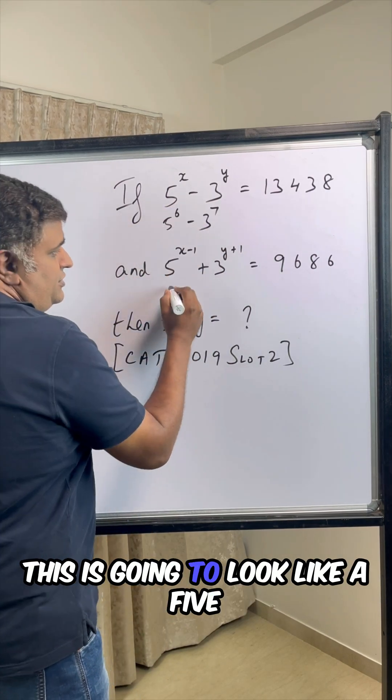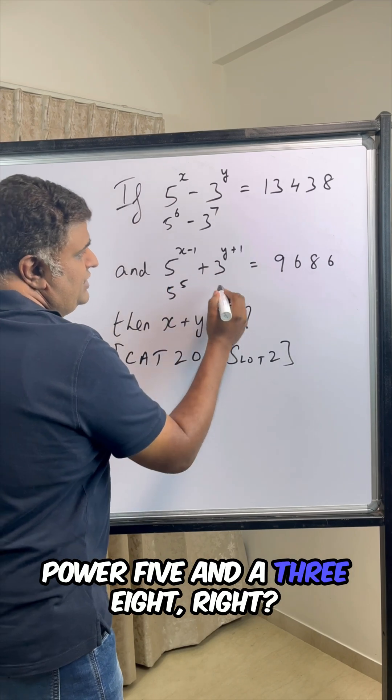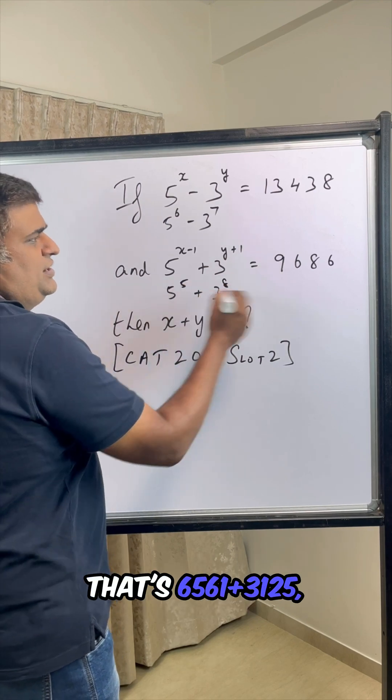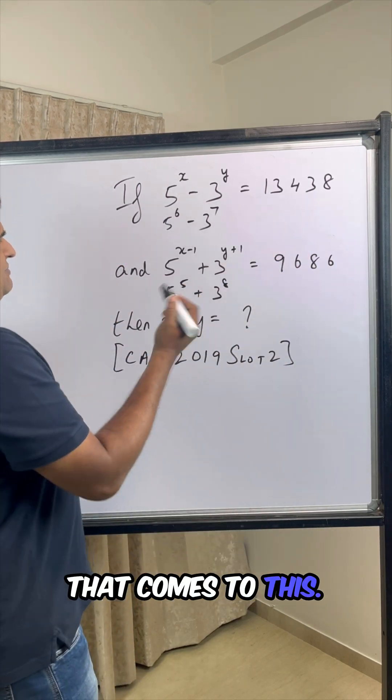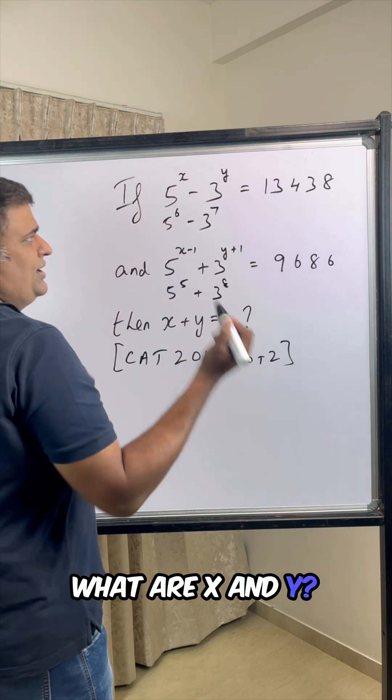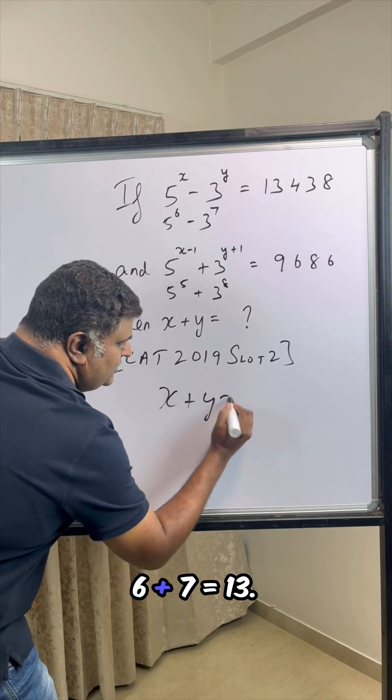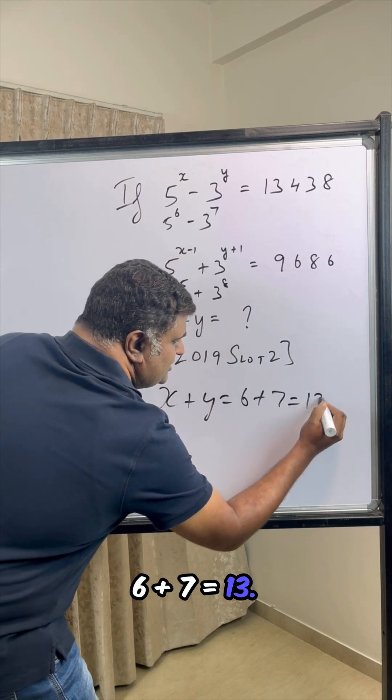Which means over here, this is going to be 5 power 6 and 3 power 7. When you subtract these, that comes to 13,438, and that's it. What are x and y? x and y are 6 and 7, so x plus y is nothing but 6 plus 7 equals 13.